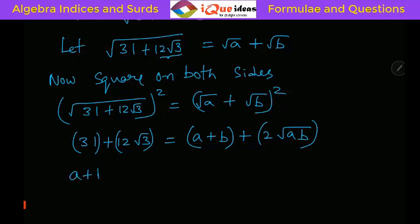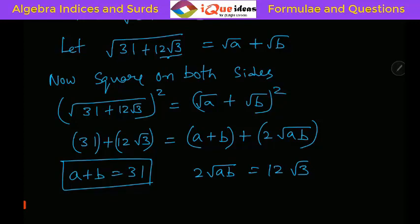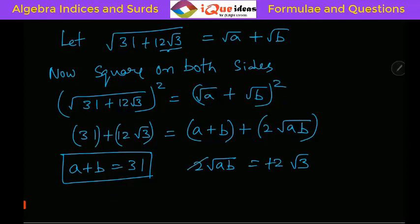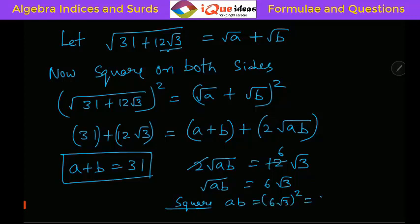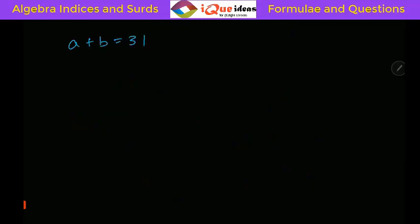From equating rational and irrational parts, we get: a + b = 31, and 2√(ab) = 12√3. Dividing by 2: √(ab) = 6√3. Squaring again: ab = (6√3)² = 36 × 3 = 108. So we now have a + b = 31 and a × b = 108.